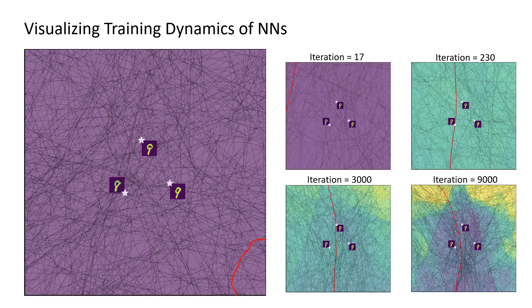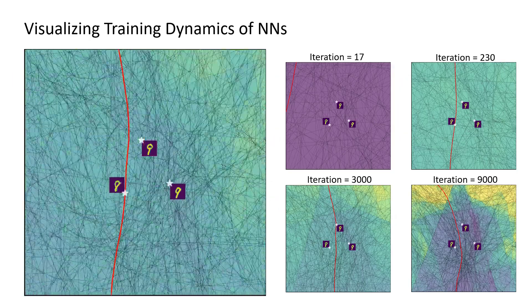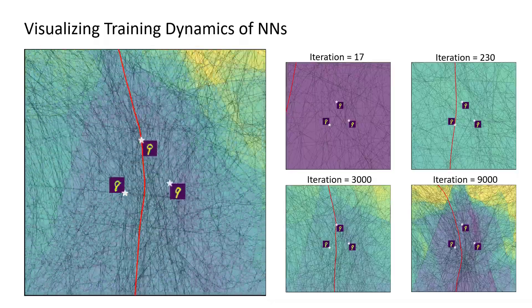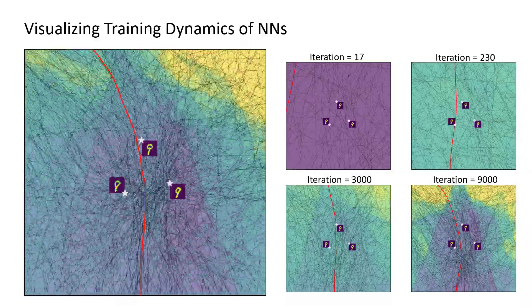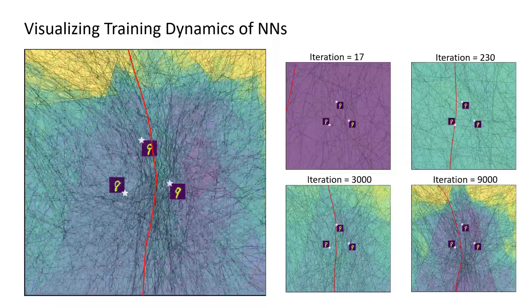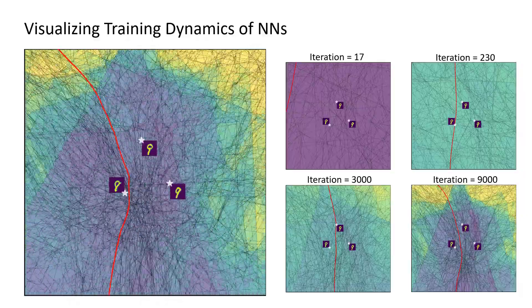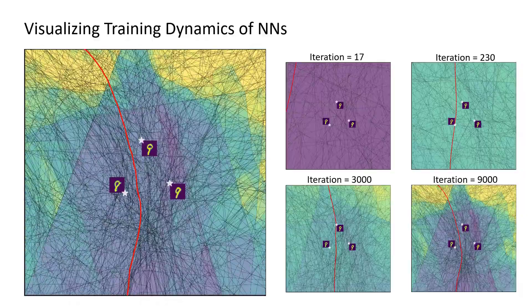We can also monitor the training dynamics of DNNs via SplineCam. For example, here we are training an MLP on MNIST and visualizing the partition on a 2D ROI that intersects three training points from the MNIST training set. Each region is color-coded by the norm of the slope parameter for that region.